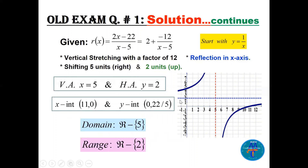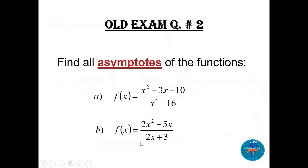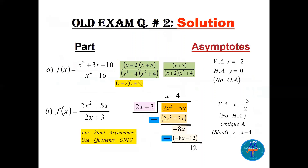The domain is all real numbers except 5 (the vertical asymptote), and the range is all real numbers except y = 2 (the horizontal asymptote). For the next question, find all the asymptotes of these functions. We need to factor first.